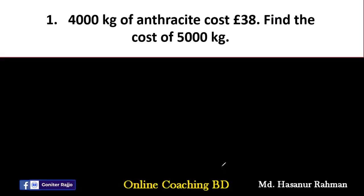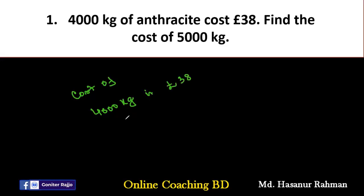Number 1 says 4,000 kg of anthracite cost 38 pounds. Find the cost of 5,000 kg. This one is very easy. Cost of 4,000 kg is 38 pounds, so cost of 1 kg will be 38 divided by 4,000 pounds.